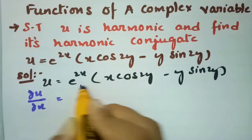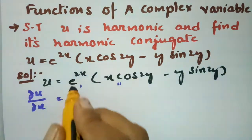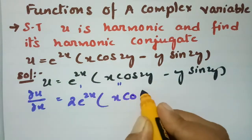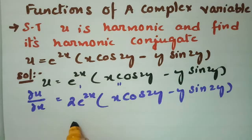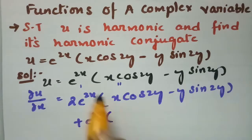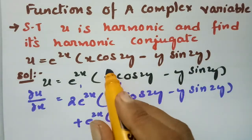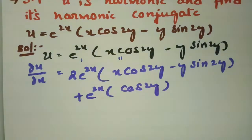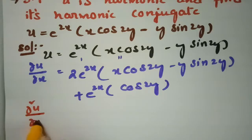This is our first function and this is our second function. Differentiating with respect to x: the first term gives 2·e^(2x) times (x·cos2y − y·sin2y), and leaving the first function and differentiating the second with respect to x gives cos2y. This is equation number 1.